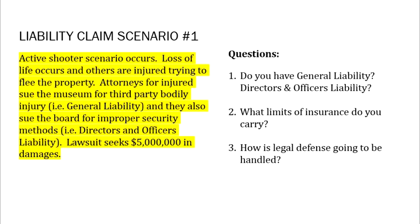Here are two claim scenarios. Worst-case: an active shooter scenario occurs at your museum, with loss of life. Attorneys for the injured sue the museum for third-party bodily injury — that's a general liability claim. They also sue the board for improper security methods, arguing the board should have known this was a potential target and should have had better security. So you find yourself in a $5 million claim that is part general liability and part directors and officers liability. Do you have general liability? Likely yes. Do you have D&O liability? Sometimes. Do you have enough to cover a $5 million lawsuit? How is legal defense handled?